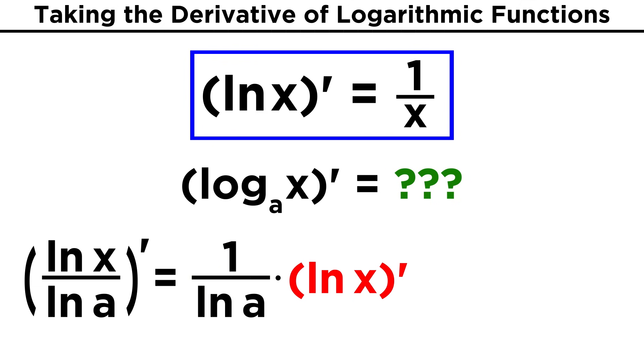And as we said, the derivative of the natural log of X is equal to one over X. So putting our constant back in, we get one over the natural log of A times X.